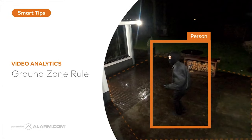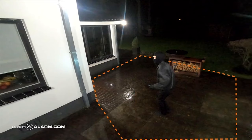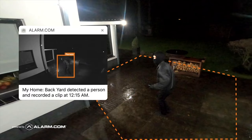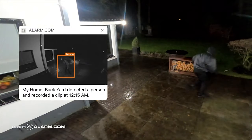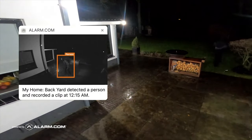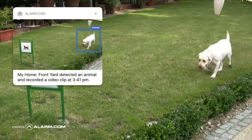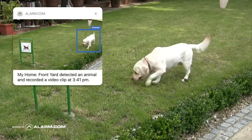Ground zone video analytics rules are best used for capturing loitering in a specified area. For example, a person loitering near your back door or an animal in your front yard.